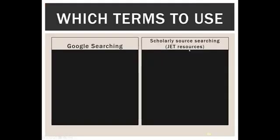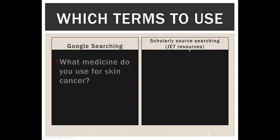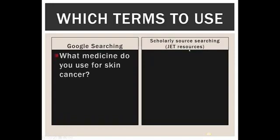When you're using Google, you could just ask it a question — you could say, what medicine do you use for skin cancer? And you'll get results. You might have to wade through hundreds of results to find what you're looking for, but eventually you'll hit it. With library resources, you don't want to ask a question. You want to think about the words that are most likely to come up in your dream article — what words are unique and specific?